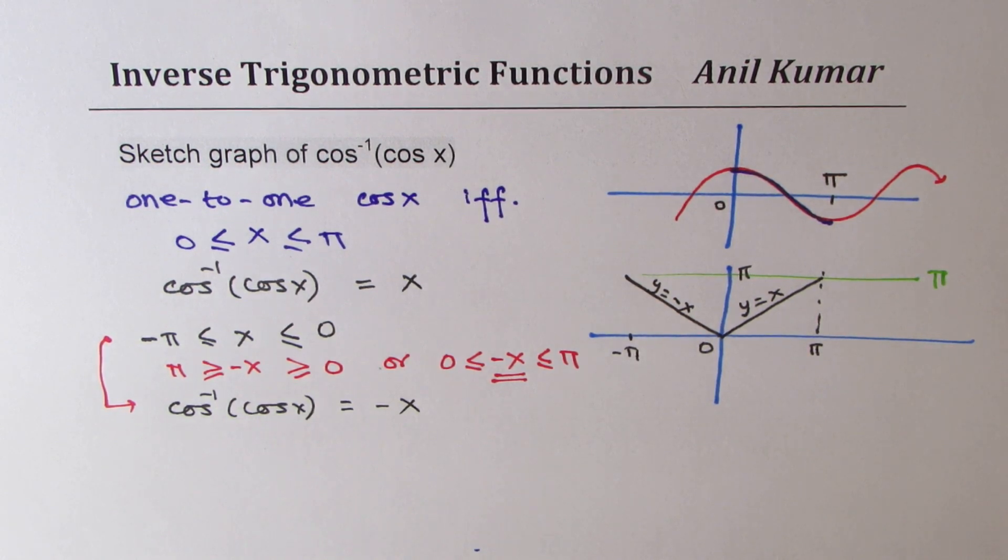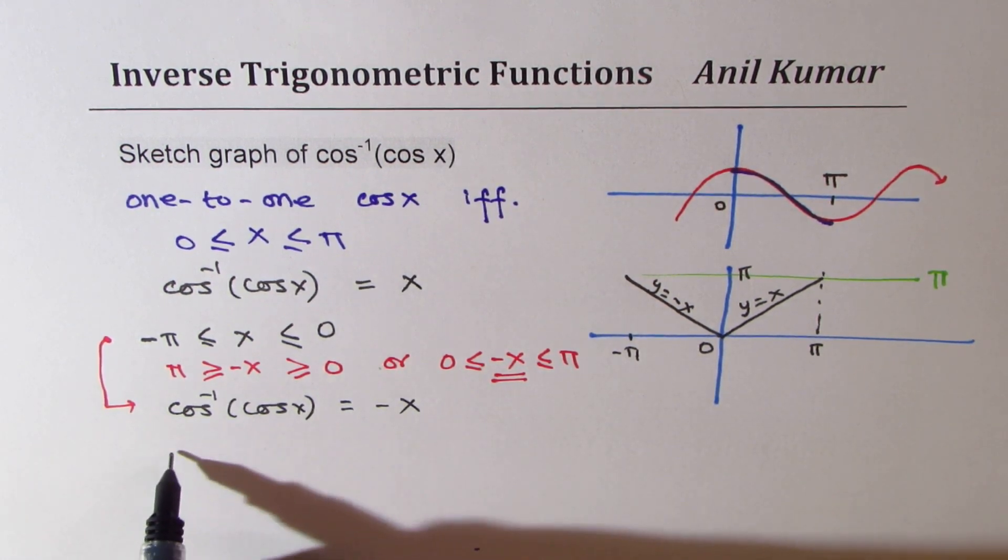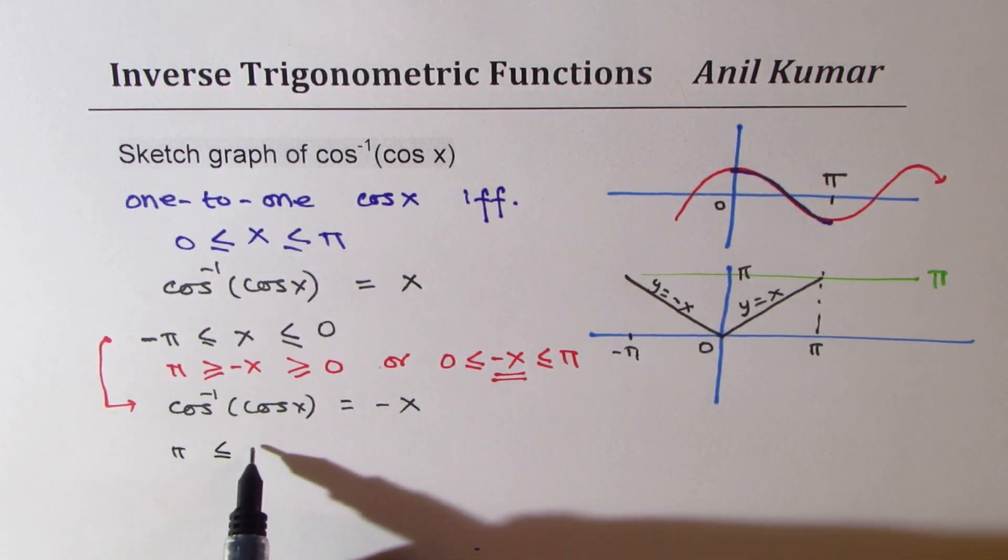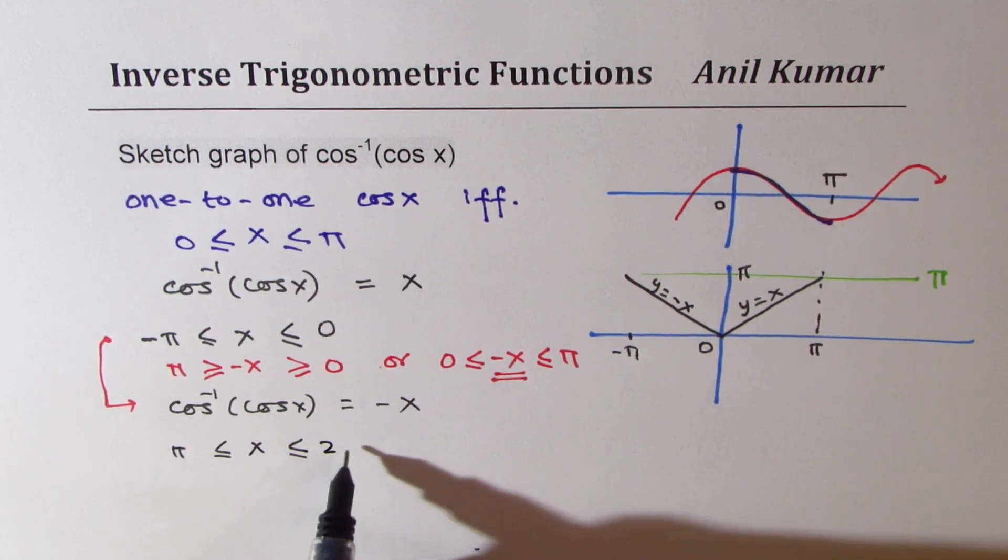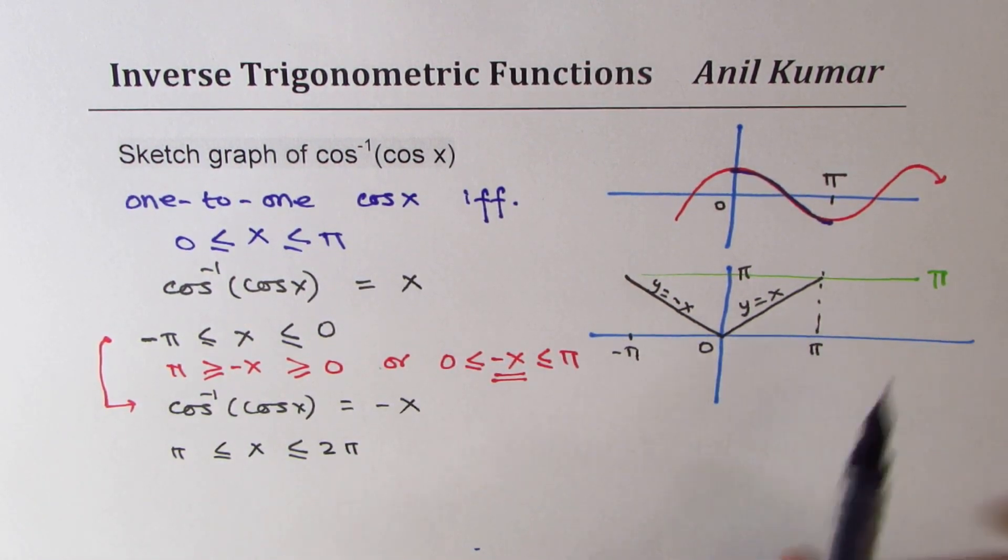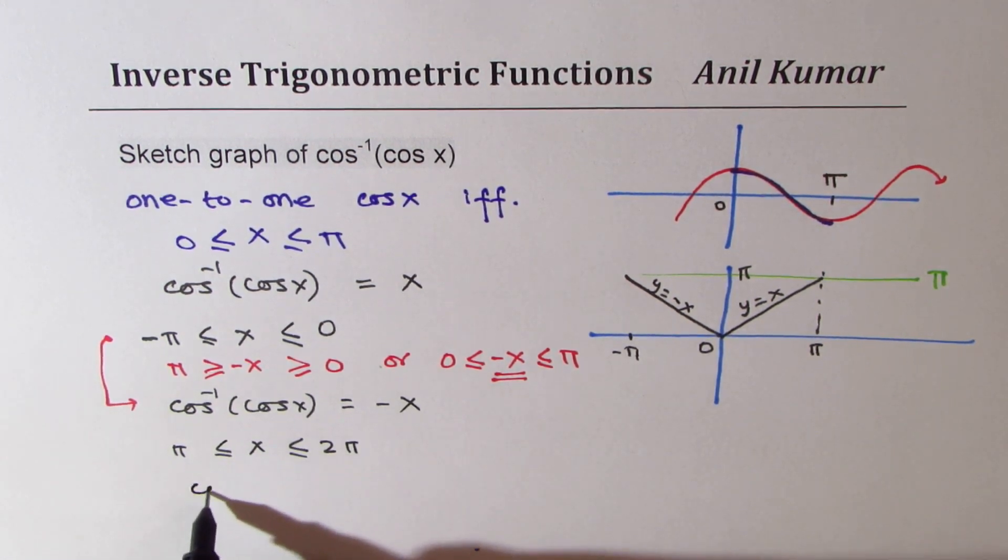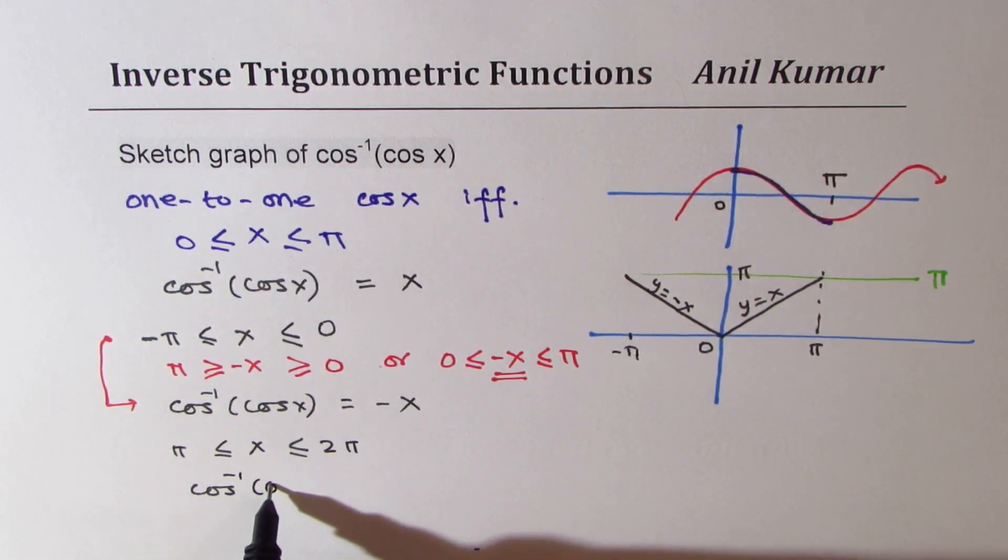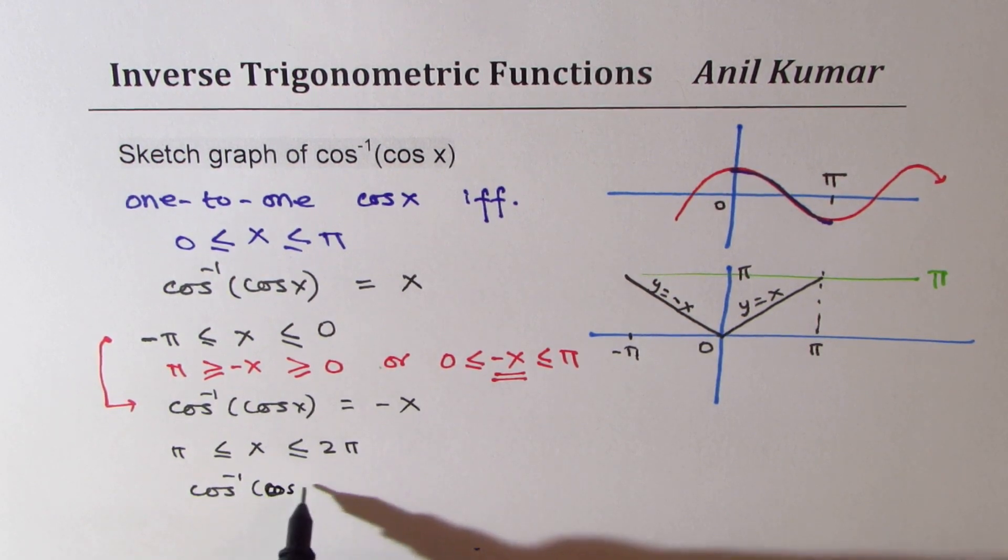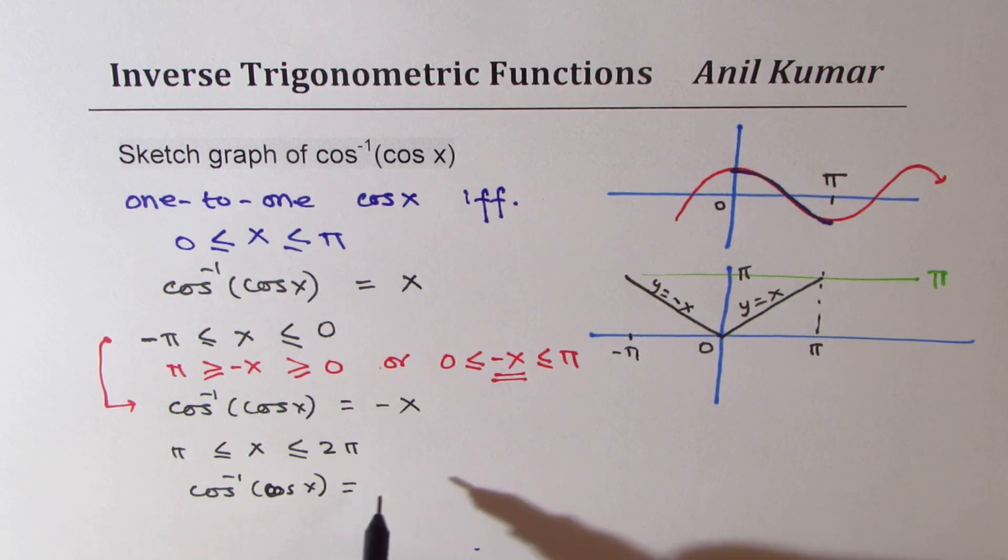You are getting an idea, right? Similarly, we could work in the other intervals. Now, you could take the interval from pi to 2 pi, for example. In this interval, pi to 2 pi, you will find that cos inverse of cos x is equal to 2 pi minus x.